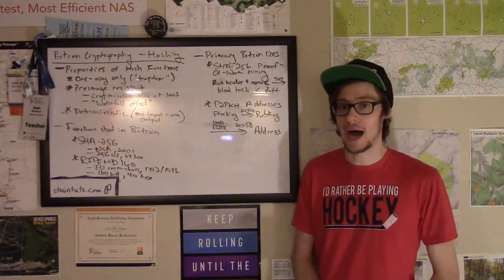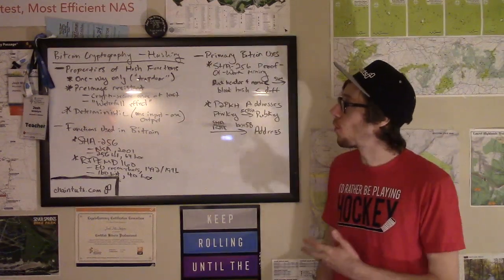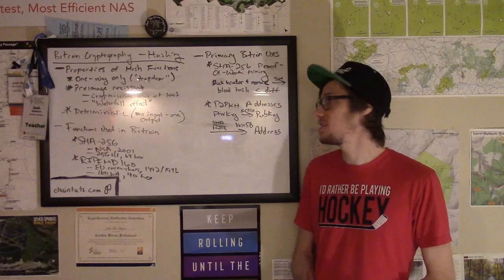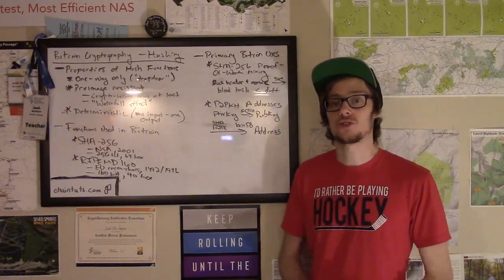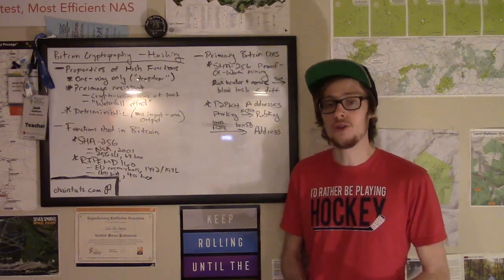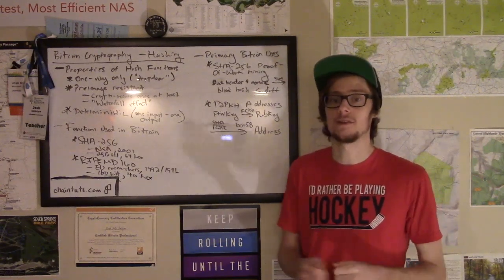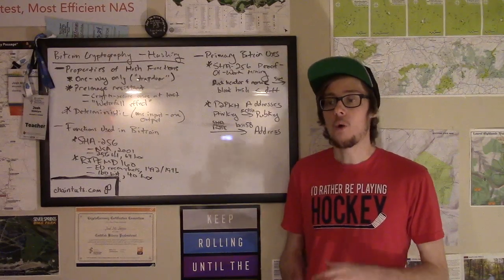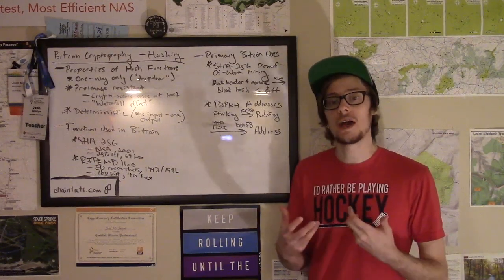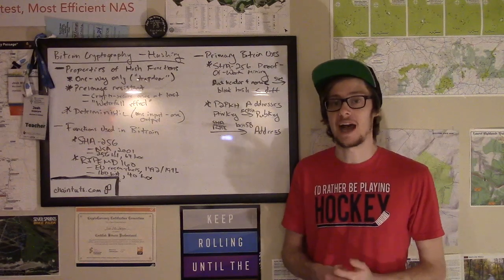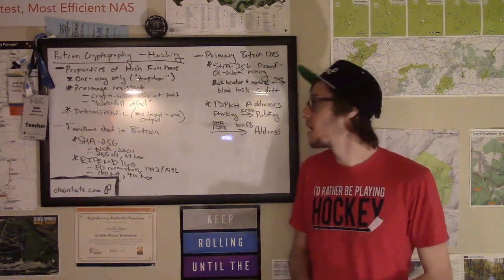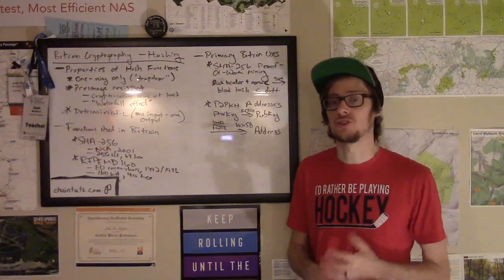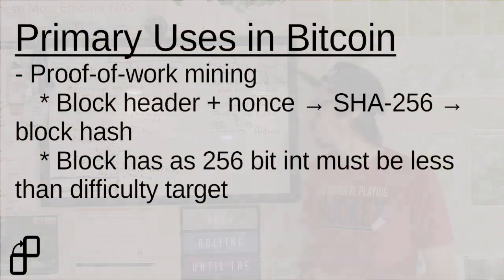The first is proof-of-work mining. In Bitcoin, this uses SHA-256. So what happens is every 10 minutes or so on the Bitcoin blockchain, a new block of process transactions is added to the end of that chain. Now during this 10-minute period, what miners do is they group together unconfirmed transactions into what they call a candidate block. They take the block header, which is like a sort of metadata summary of those transactions, add a random nonce value and run it through SHA-256.